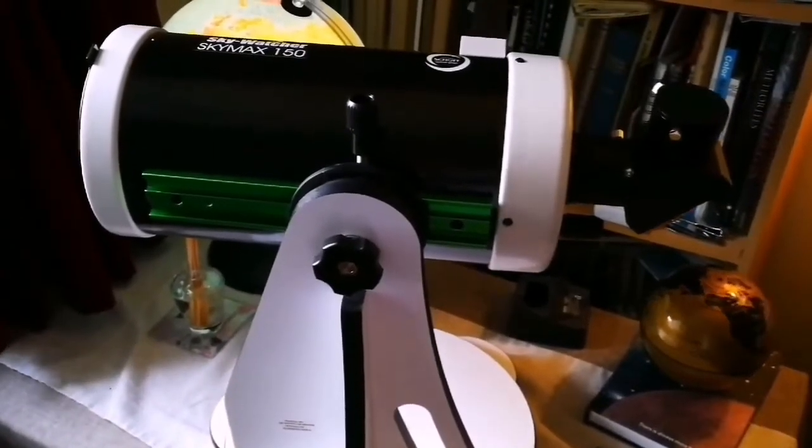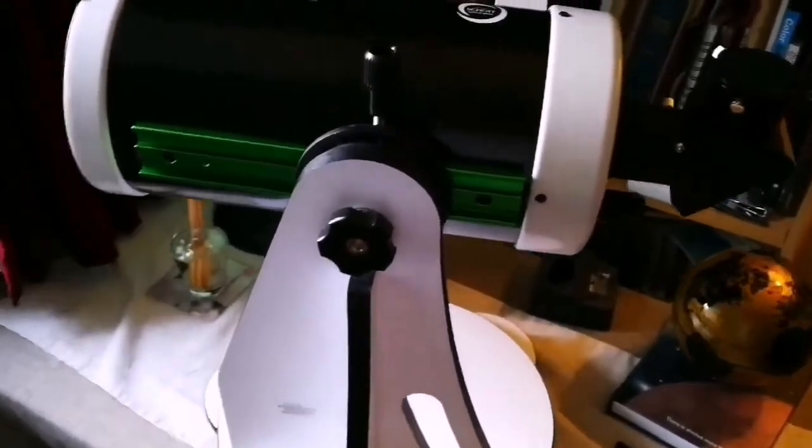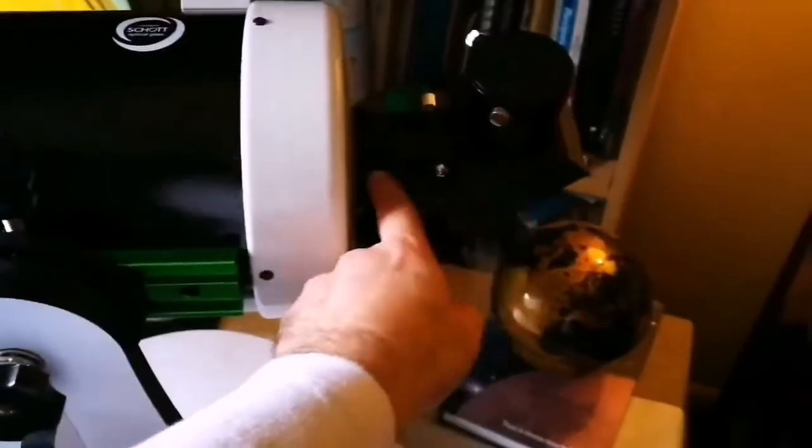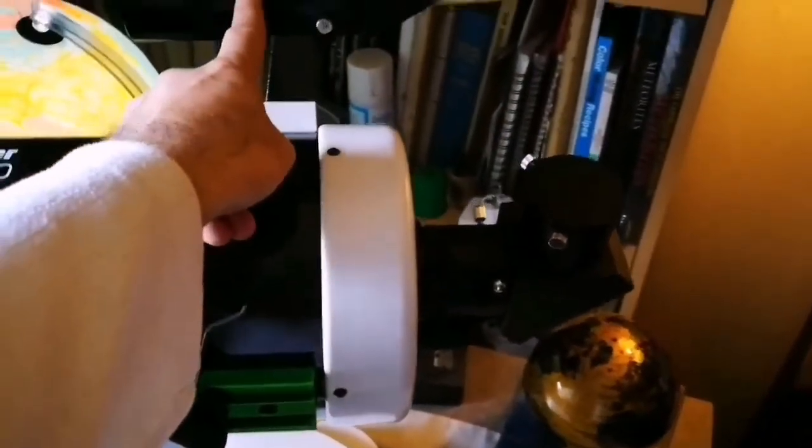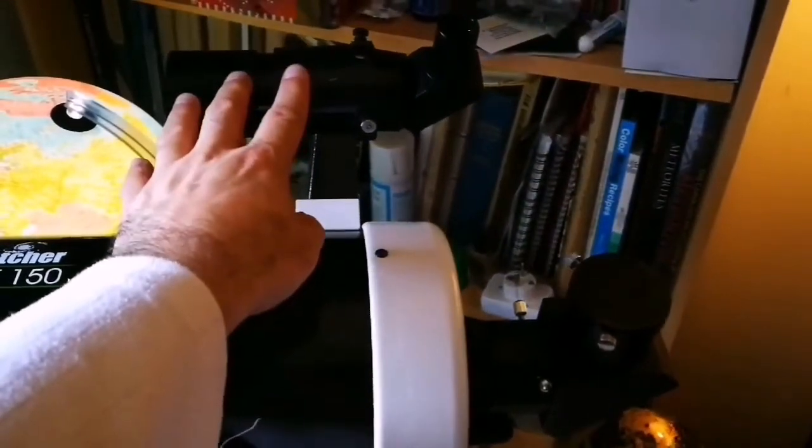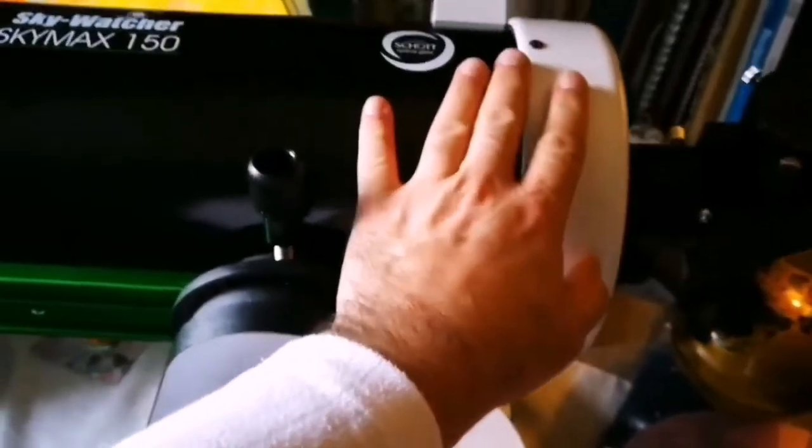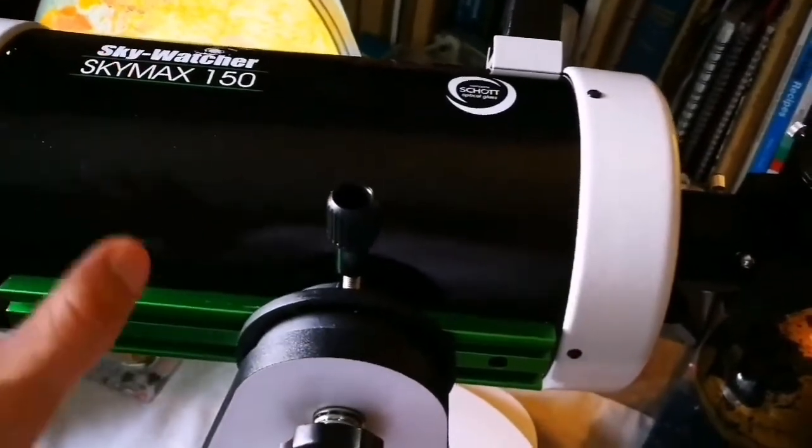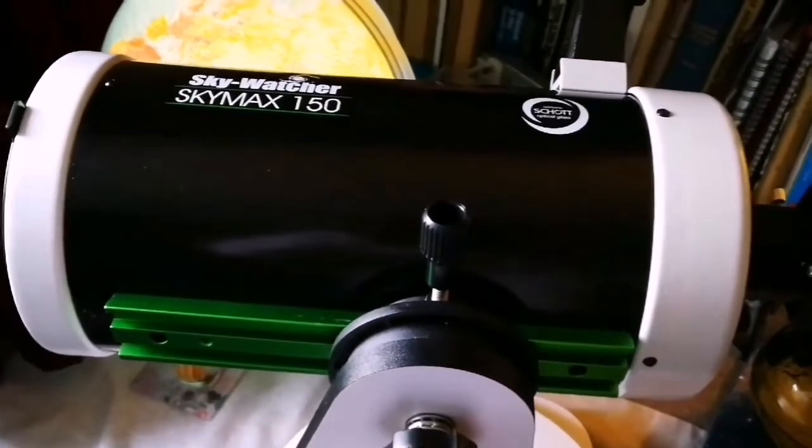This is a SkyWatcher Sky-Max 150 millimeter Maksutov telescope. It's around 7 kilograms with the diagonal eyepiece and finder. This finder I've added on my own and it's a right angle finder, so easy to look at. But the problem with this telescope, everywhere I've seen, they say that it needs a very robust, heavier mount like EQ5 or above.